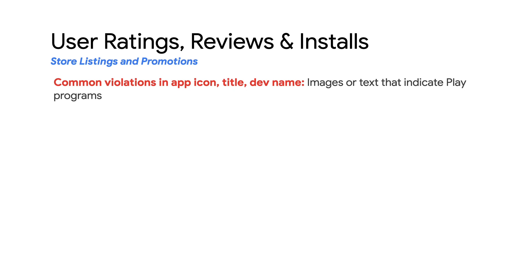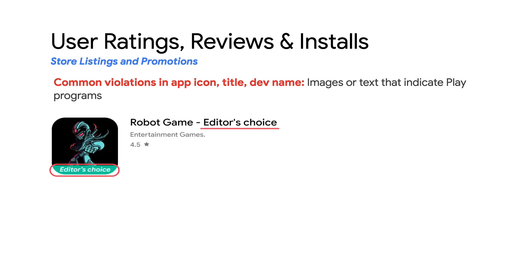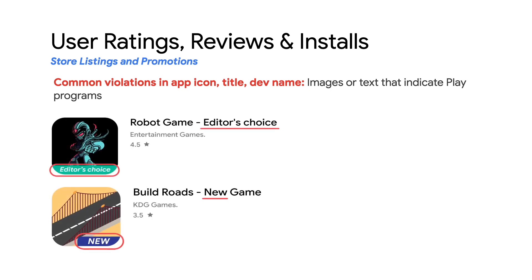Lastly, apps must not have images or text that indicate Google endorsement, such as 'Editor's Choice,' 'New,' etc., used in the app icon or title. Kindly remember that these examples violate the store listing and promotion policy and non-compliant apps will be rejected.